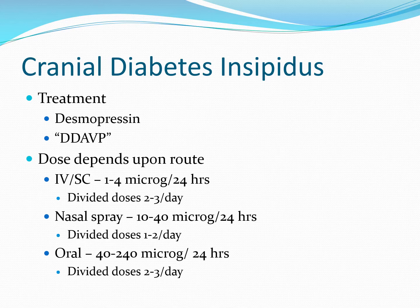The treatment of cranial diabetes insipidus is simply replacing what is lost. This typically means prescribing desmopressin or DDAVP. The dose given depends upon route. In intensive care, in an acute case of diabetes insipidus, I'll seek to replace antidiuretic hormone either intravenously or subcutaneously, starting at around one microgram over the first 24 hours, titrating to effect. Longer-term chronic patients will usually have their DDAVP given by nasal spray or oral tablet.